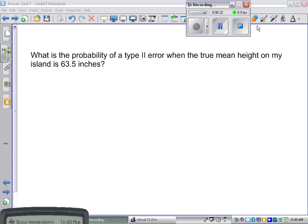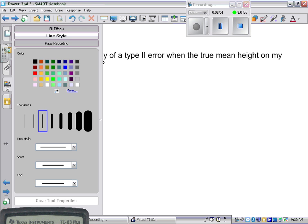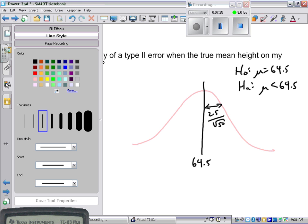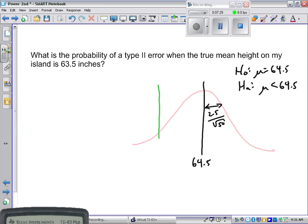So now I want to examine the probability of a type 2 error. And we said the probability of a type 2 error is known as beta. And I've asked, what is the probability of a type 2 error when the true mean height on my island is 63.5 inches? And this is the part where I'm going to start using the colors because I think it'll help everything out. So I want to start by simply rewriting what I did at the very beginning. And so we'll use pink to represent a normal curve because that matches up with our pink chart. And the center here was 64.5. Standard deviation was 2.5 divided by the square root of 50.